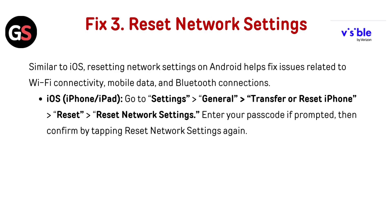Fix 3: Reset Network Settings. Similar to iOS, resetting network settings on Android helps fix issues related to Wi-Fi connectivity, mobile data, and Bluetooth connection. For iOS, iPhone or iPad, go to Settings, then General, then Transfer or Reset iPhone, then go to Reset, then Reset Network Settings. Enter your passcode if prompted, then confirm by tapping Reset Network Settings again.